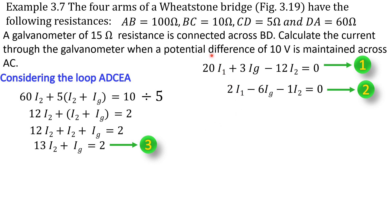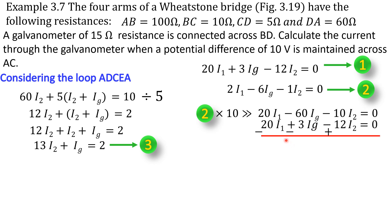Next, we have to cancel this 20I1. So we have to multiply the second equation by 10, we get this one. And subtracting this first equation from this equation, this I1 is cancelled. So the resultant value is 63IG minus 2I2 is equal to 0. Rearranging this equation, we get this one. Bringing this 2 here, we get this one.